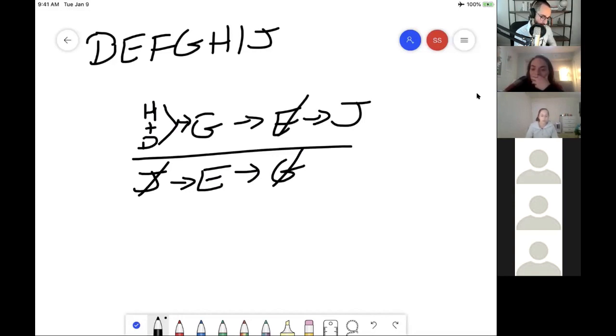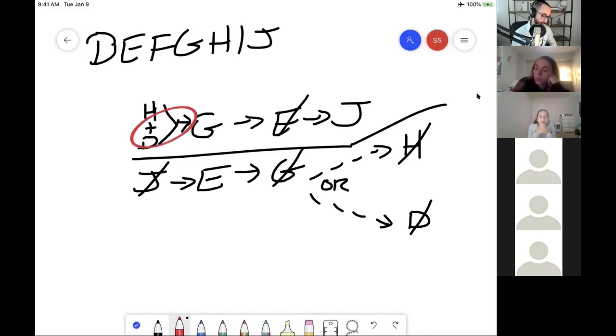So H and D being in are sufficient to guarantee G. The two of them together form the sufficient condition, meaning if you lack G, then you must lack at least one of those two. For this, I like to use a dotted arrow. If you don't have G, then you must have lacked at least one of H or D. So dotted arrow indicates ambiguity in the necessary condition. If G is out, then you must lack at least one of H or D.